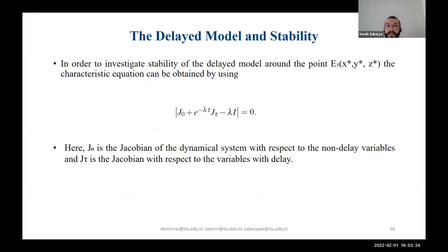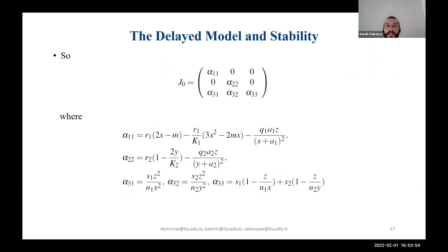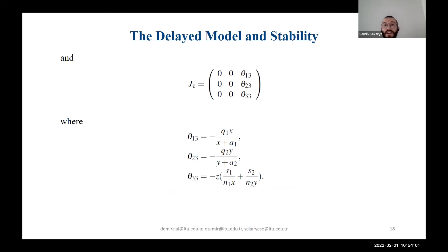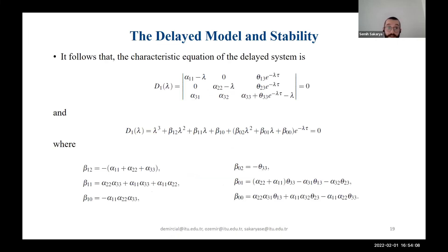To decide the stability of the dynamical system around equilibrium point E3, we use the following equation to obtain the characteristic equation. Here J0 is the Jacobian with respect to the non-delay variables, whereas J_tau is the Jacobian with respect to the variables with delay. We write J0 depending on alphas and J_tau depending on thetas, then obtain our characteristic equation of the delayed system.